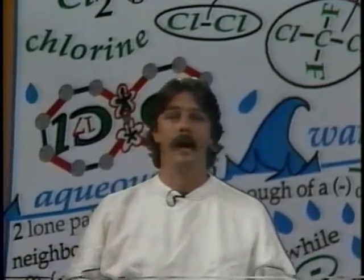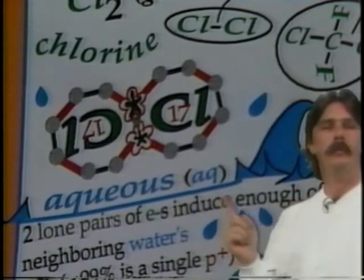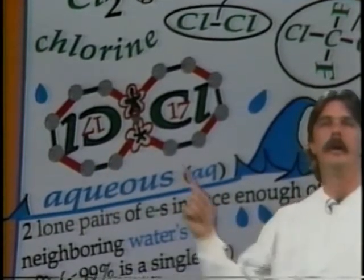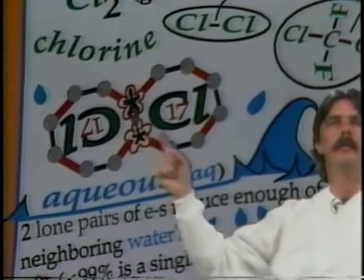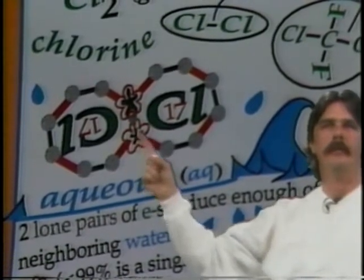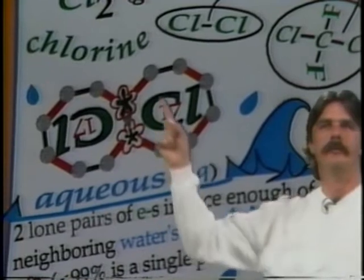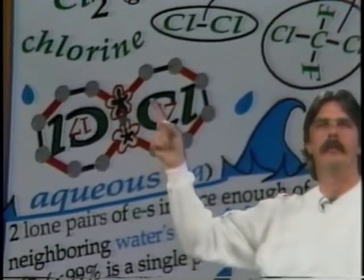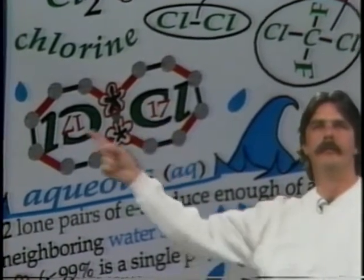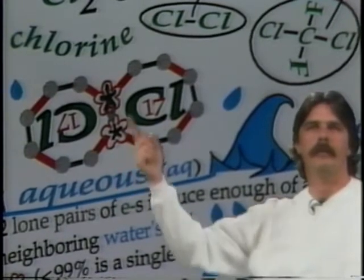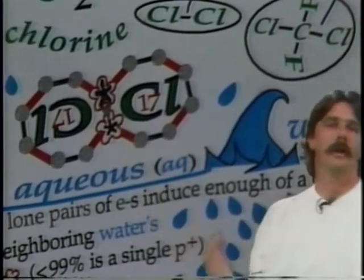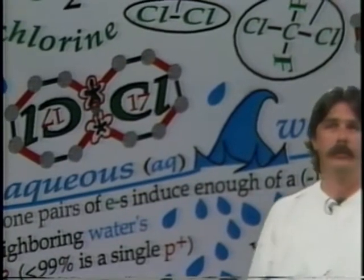An example of covalent bonding is one of the diatomics — di meaning two. Two chlorine atoms will get together, both needing one more electron for their octet. If they share their electron pair, chlorine goes from seven to eight electrons, so they both end up having their octets filled with a sharing of this electron pair between them. That's why chlorine gas is Cl2.